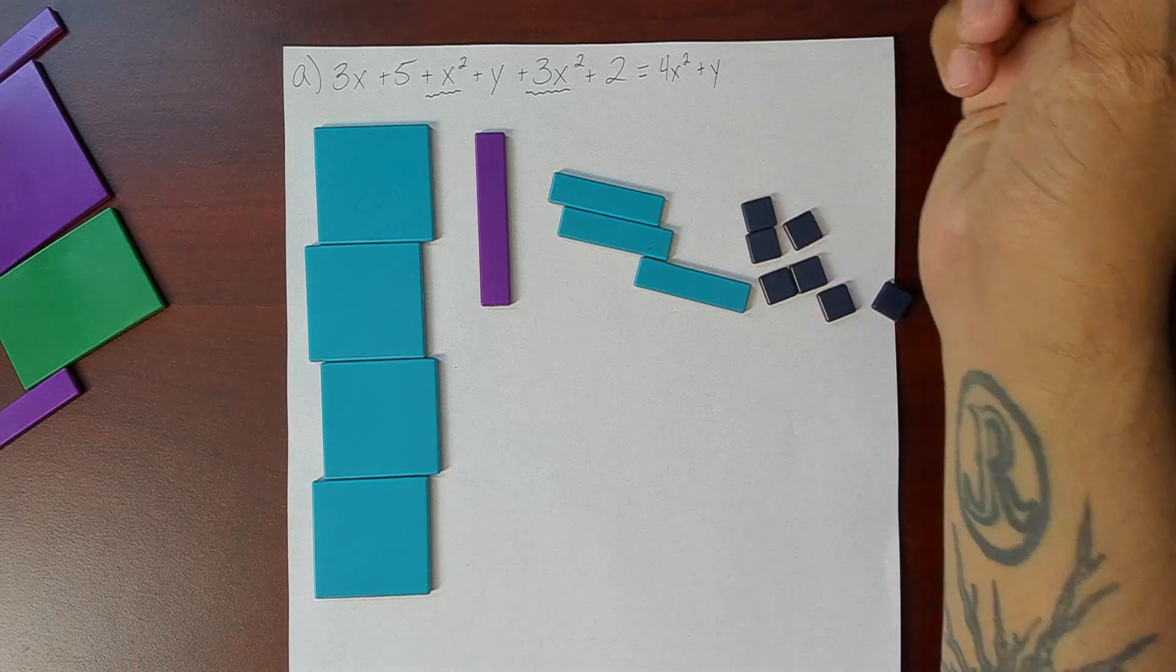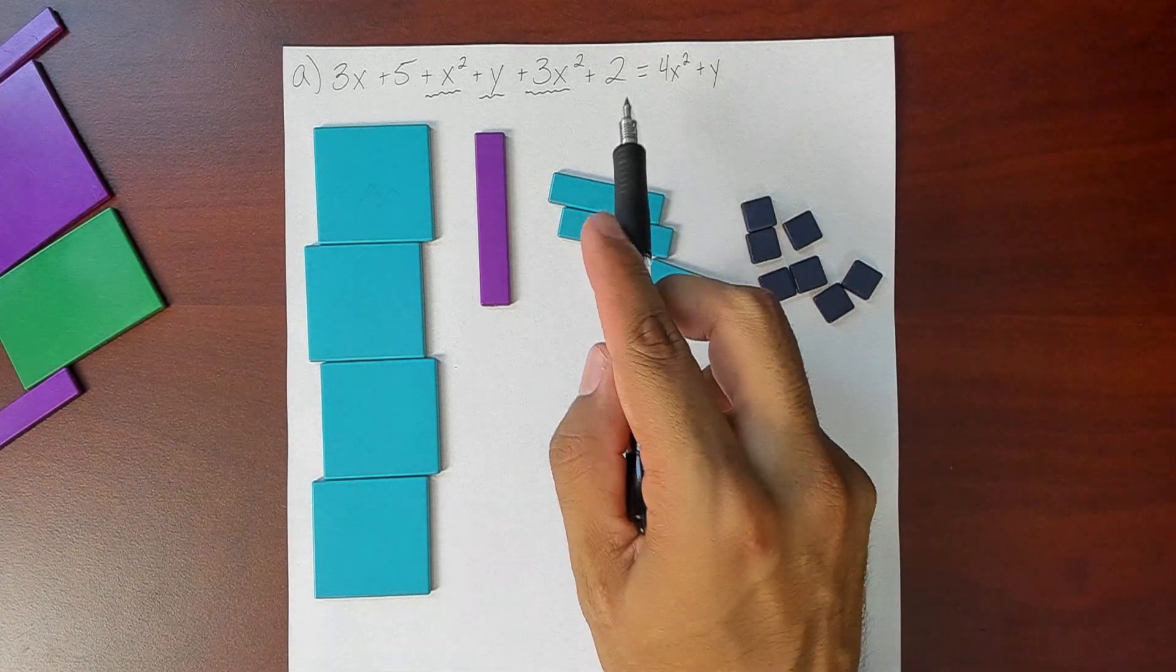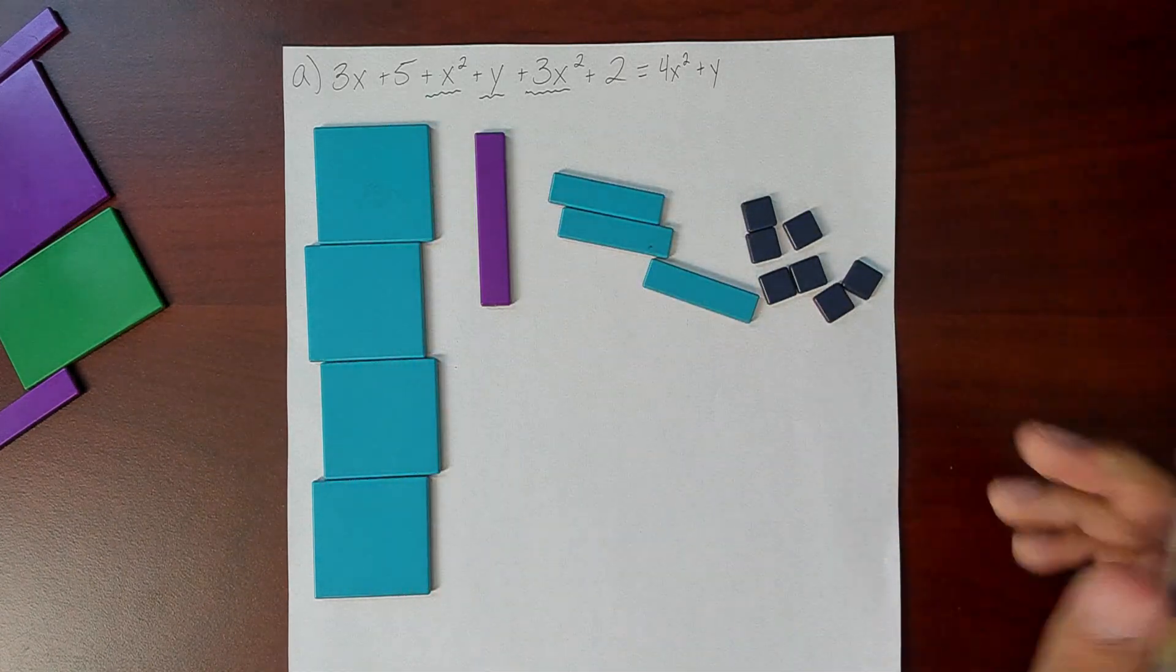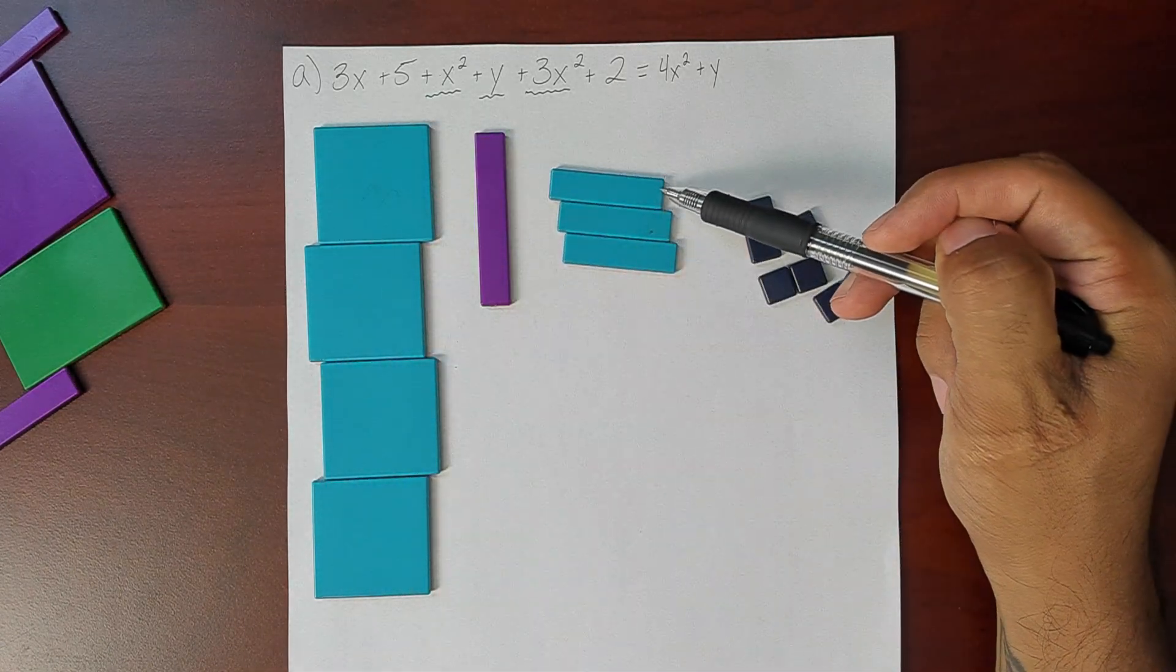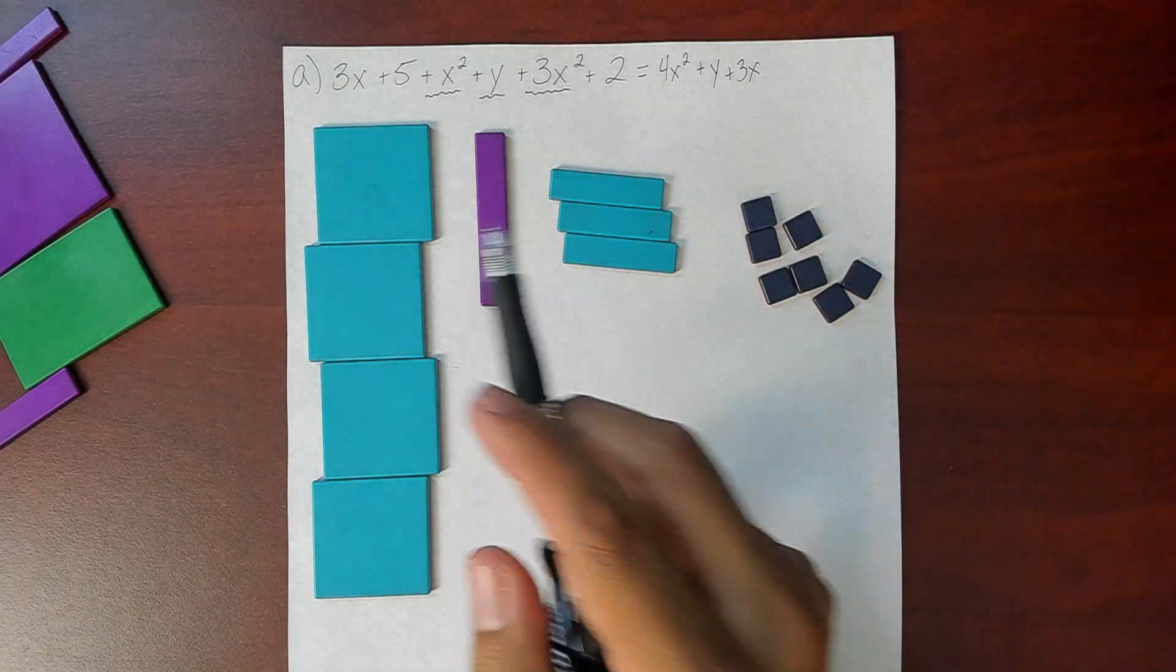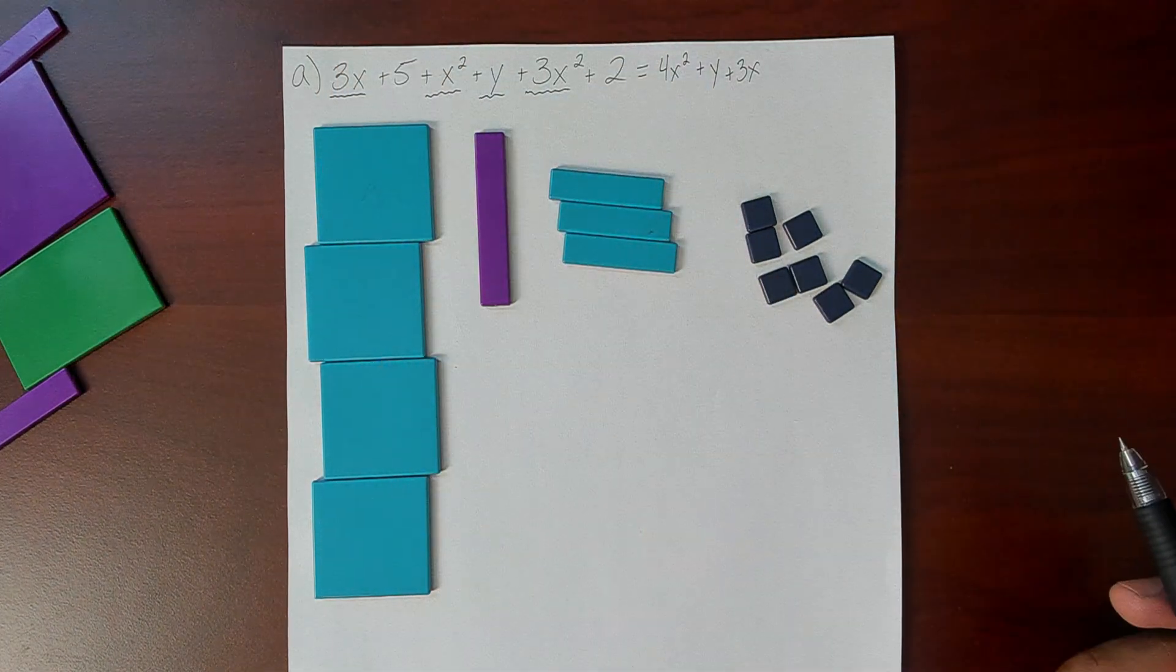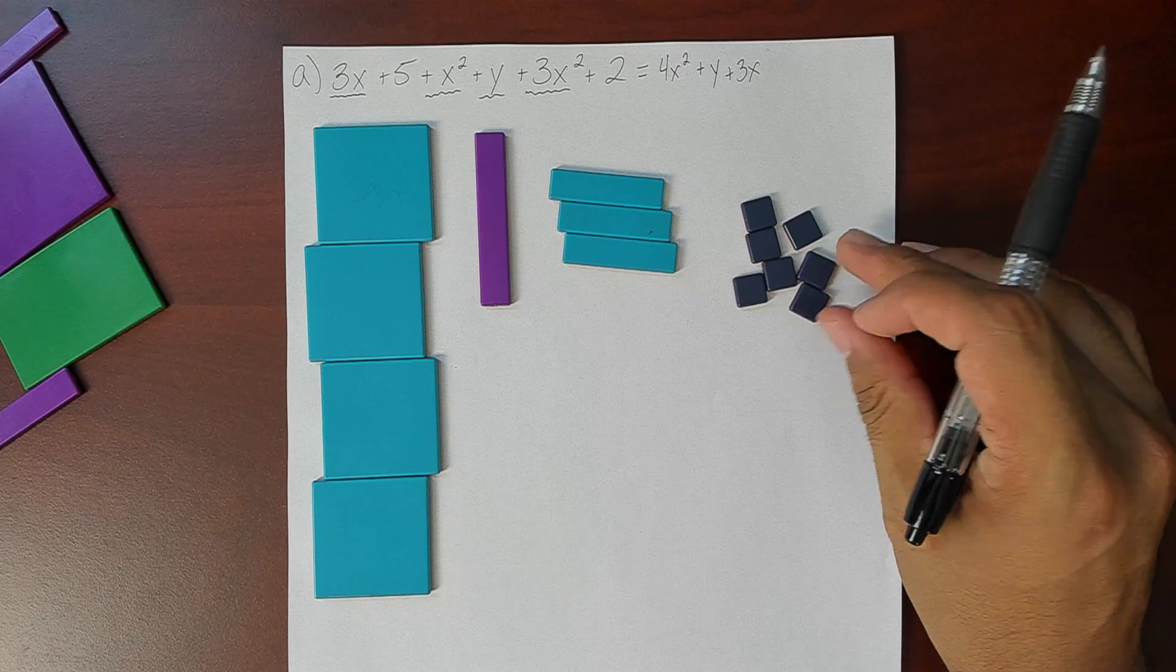You'll notice that that didn't change from its original point right there because there were no additional y tiles thrown in. Now I'm going to move on to the next tile here. We have three x's. Again, that's not changing because I only had three x's, I didn't have any other ones in here.